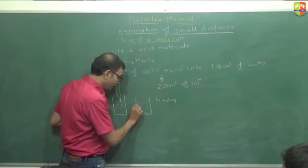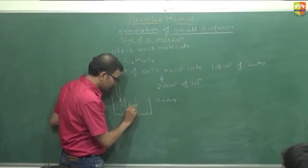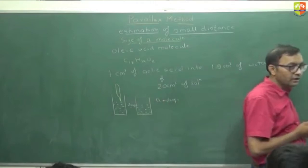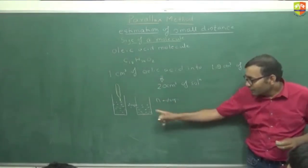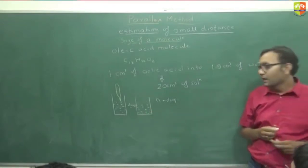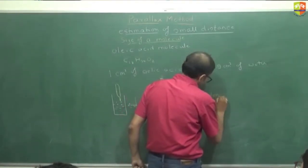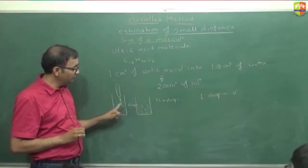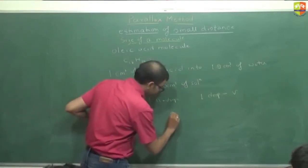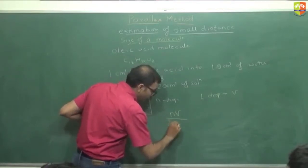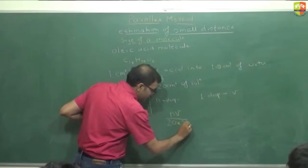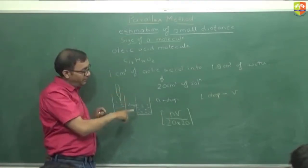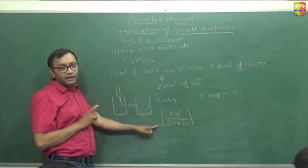You then dilute those n drops up to the 20 ml mark by adding water. So if one drop has volume V, then n drops have total volume nV. This nV was already diluted in 20 ml, so the volume of oleic acid is nV divided by 20, and dividing again by 20 gives the oleic acid content.